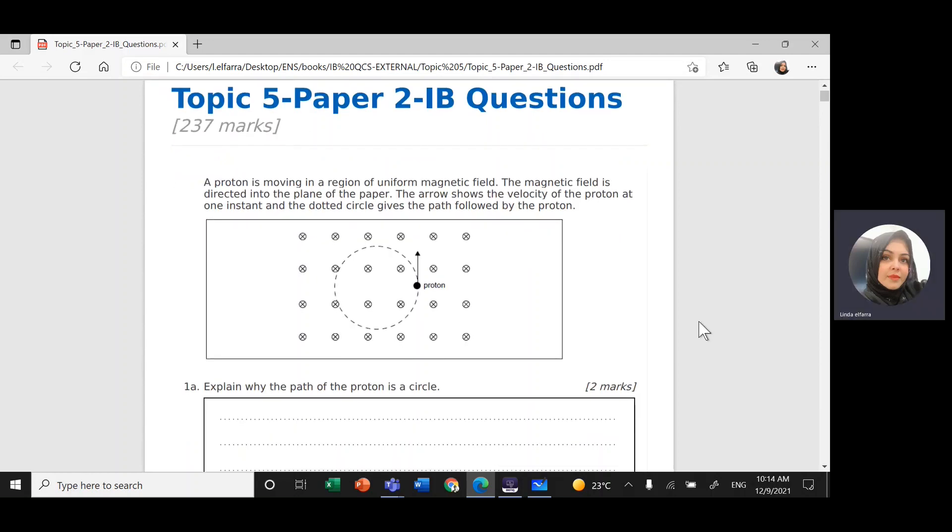We have a proton. The proton is moving in a region of uniform magnetic field. The magnetic field is directed into the plane of the paper. So here I have the cross. This represents the magnetic field and the magnetic field is going inside the paper.